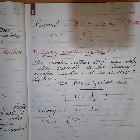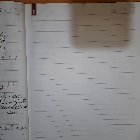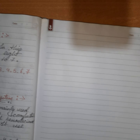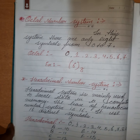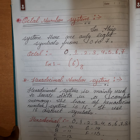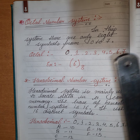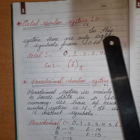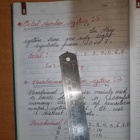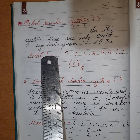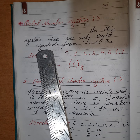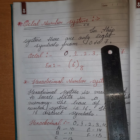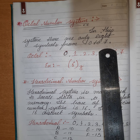Now we are coming to the third one — that is the octal number system. What is the octal number system? In this system there are only 8 symbols, from 0 to 7.